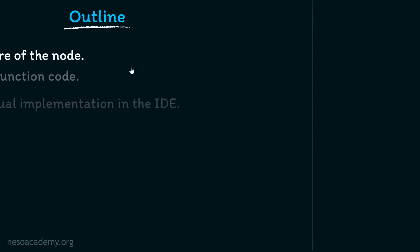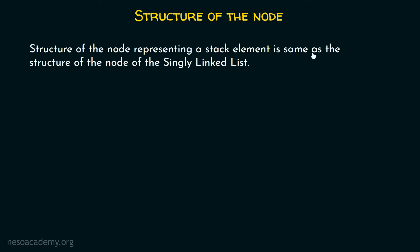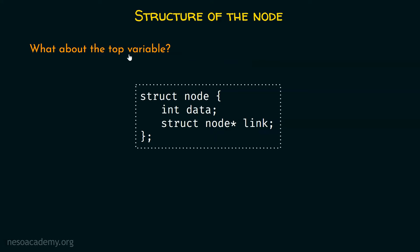First, we will see the structure of the node — how to create a node of the linked list. The structure of the node representing a stack element is the same as the structure of the node of the singly linked list. Since we are representing a stack with a singly linked list, I have declared a struct node with int data and struct node star link. But what about the top variable? In this case, we don't need a top variable; we need a top pointer instead. There is no requirement of creating a top variable — that is only required in case of arrays, not in case of linked lists.